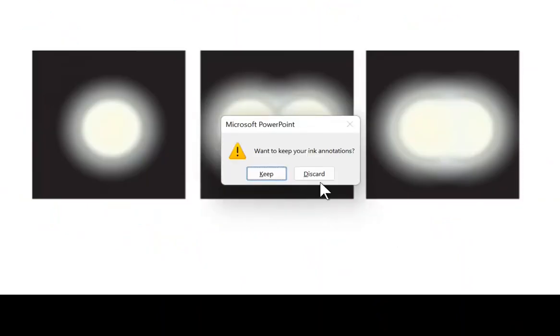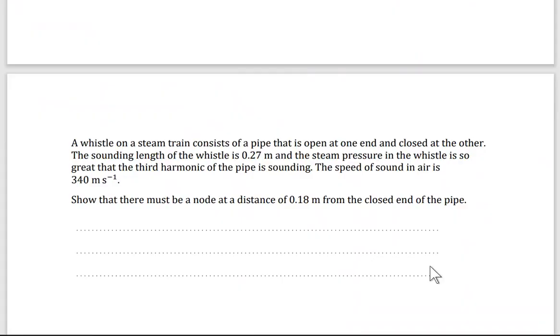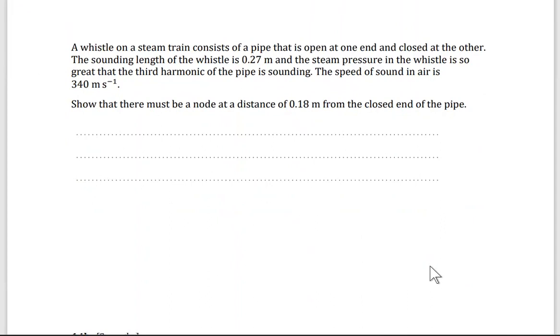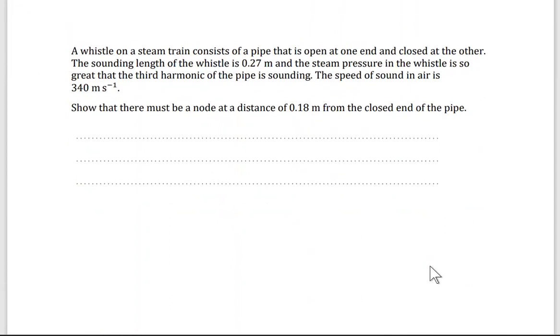Let's go back to the question. Here, the question. Show that there must be a node at distance point 18 from the closed end of the pipe. So, here in the question, let's split the given. So I have a length L. This is L. This is 0.27 meter. Speed of sound, 340. And open, close it, close on one end and open on the other end.